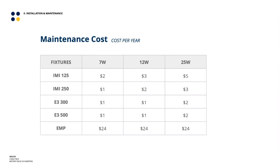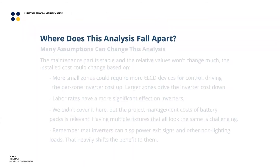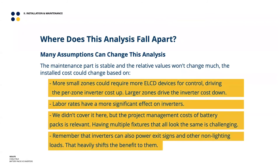Because you can fit so much more capacity on an inverter, the maintenance cost per fixture per year goes way down. On a fixture-by-fixture basis, fixtures on an IMI can cost just $2–$5 per year to maintain depending on wattage and quantity. By contrast, the cost per year for a fixture with battery backup is about $24, and that doesn't really change based on wattage since you're always running back and forth between all those individual devices.